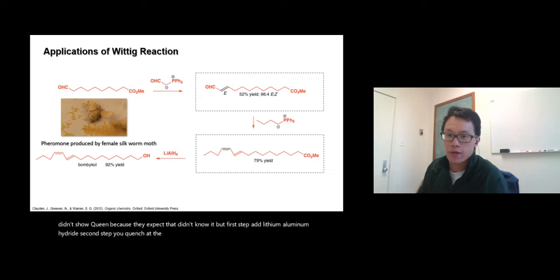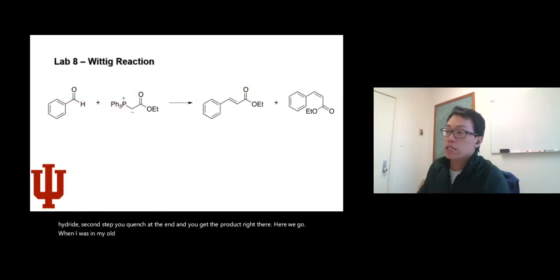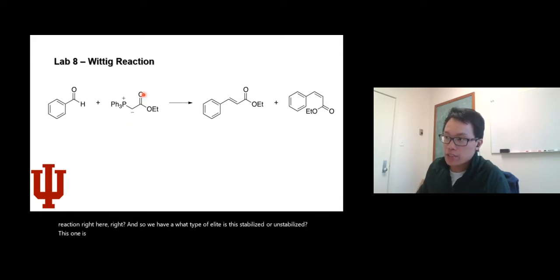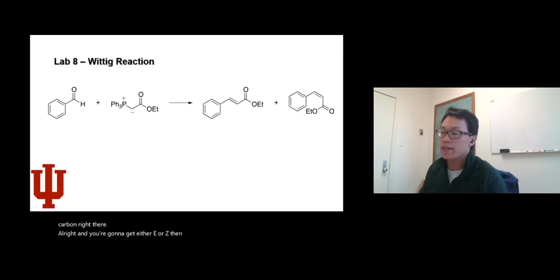When I was at my old school that I taught, we actually did this reaction, we have a Wittig reaction right here. So we have what kind of ylide is this, stabilized or unstabilized? This one is a stabilized ylide, so you got carbonyl next to it, so negative charge goes and attacks the carbon right there, and you're gonna get either E or Z, then you get possibility.